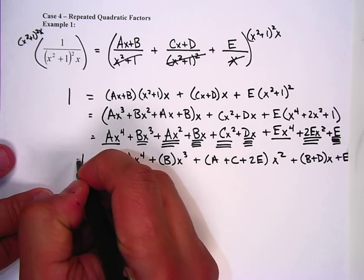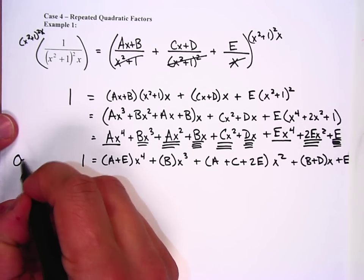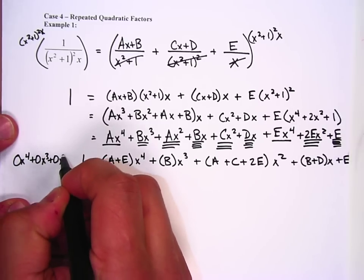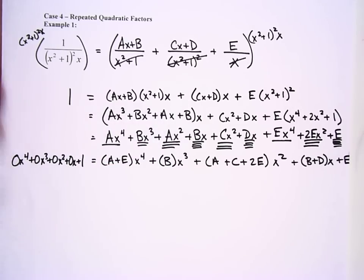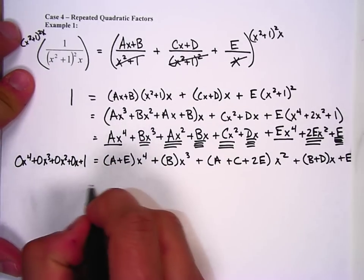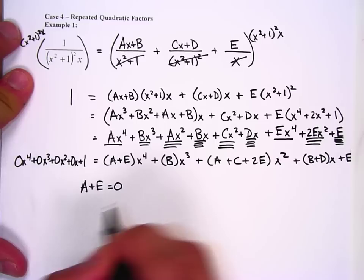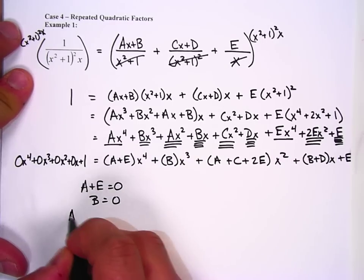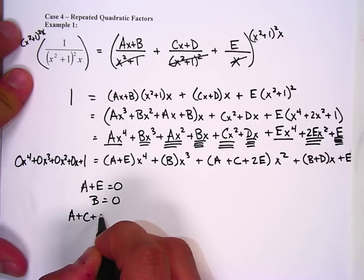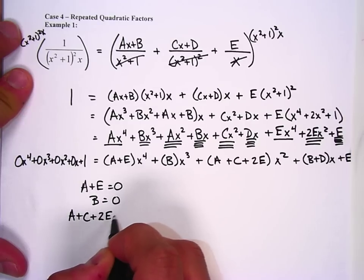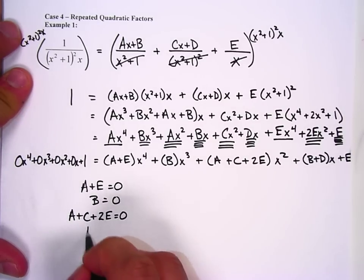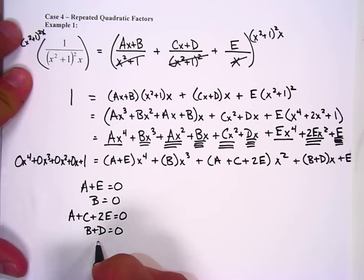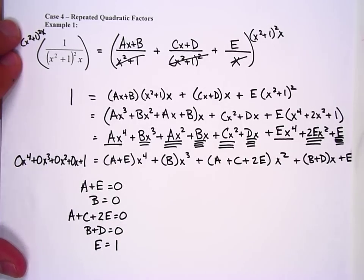Well, this is pretty interesting because we don't have any x to the fourth. We don't have any x to the third, we don't have any x squared, we don't have any x, and we just have a constant. So our equations look something like this. A plus e equals zero. This is going to be the tough one to solve. A plus c plus 2e equals zero. B plus d equals zero. And e equals one.